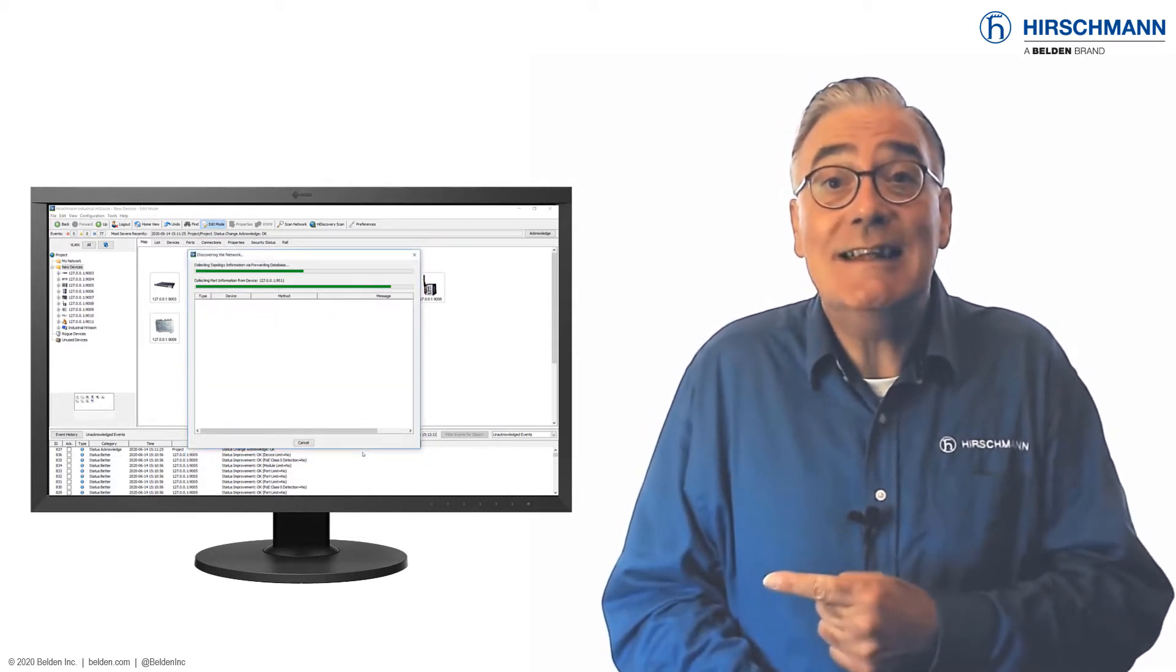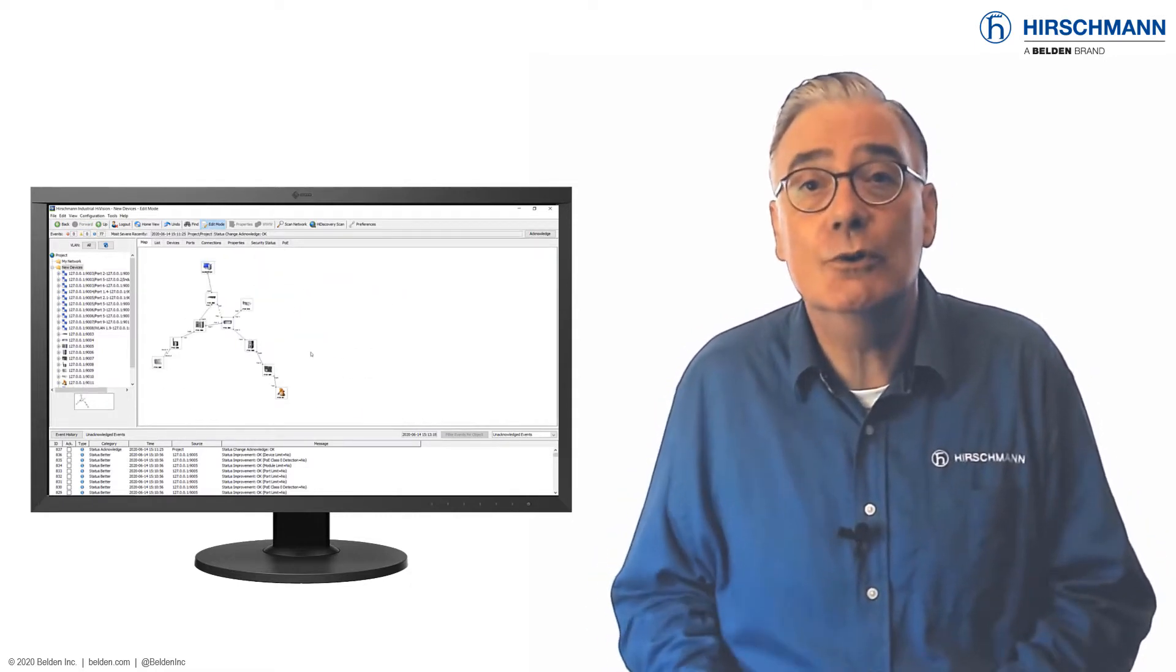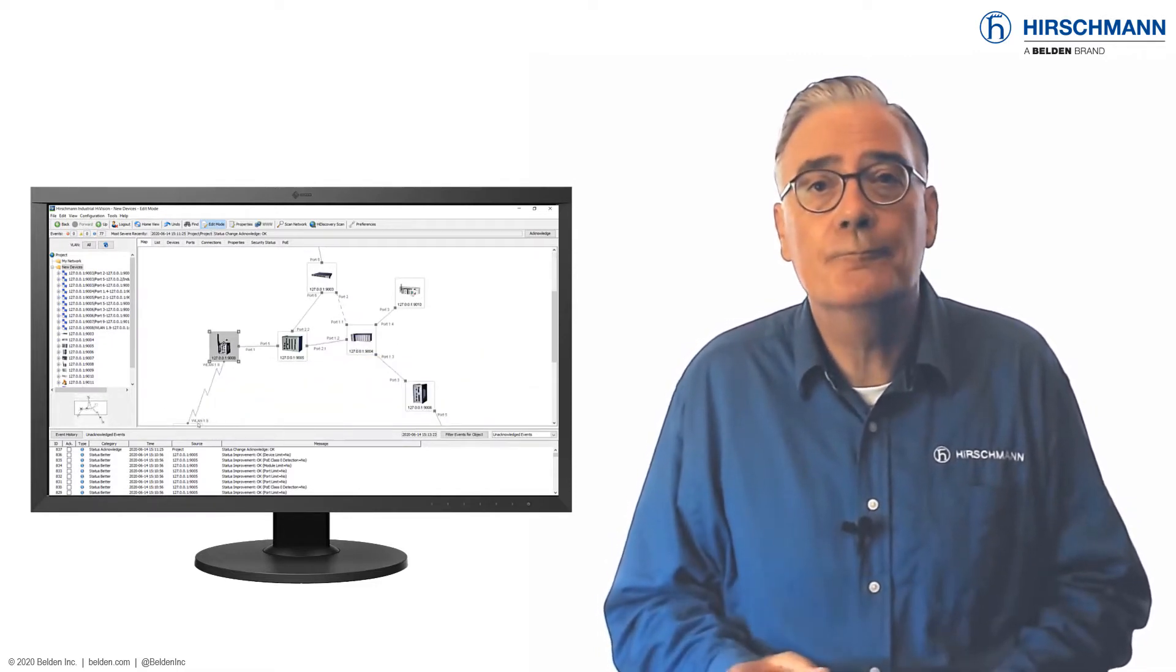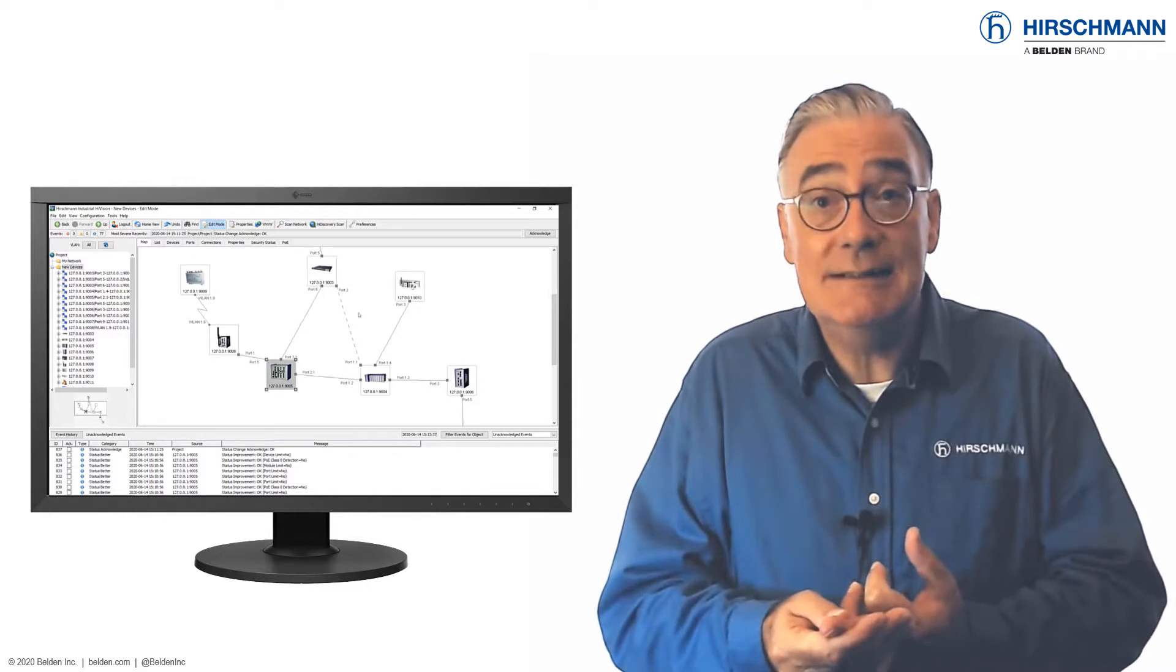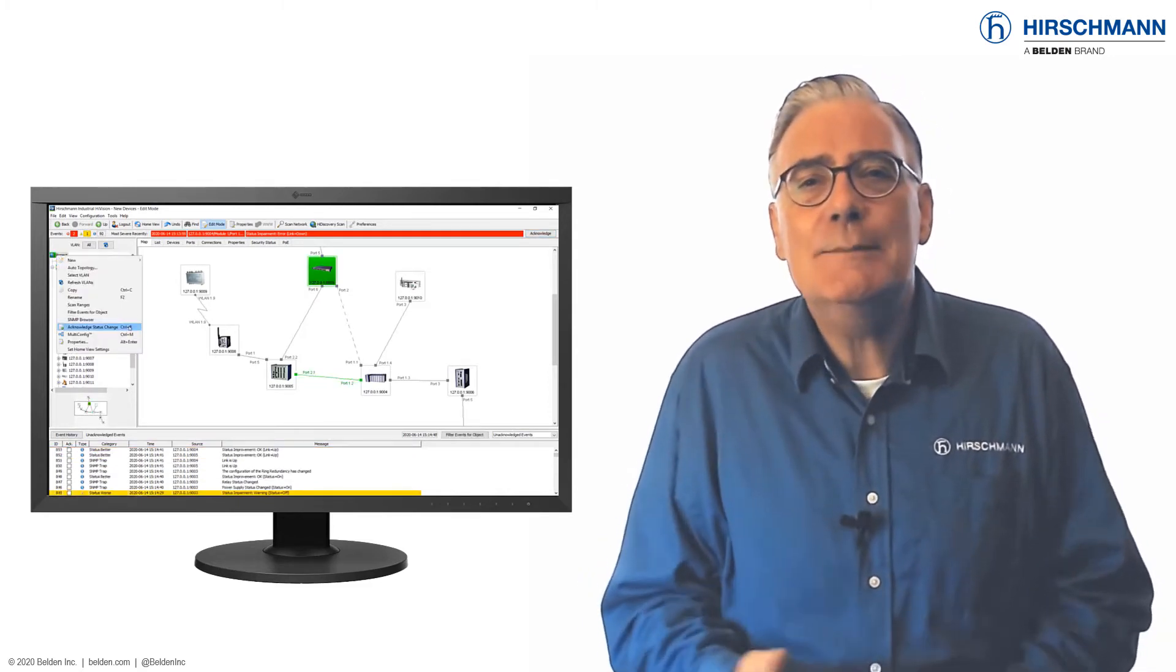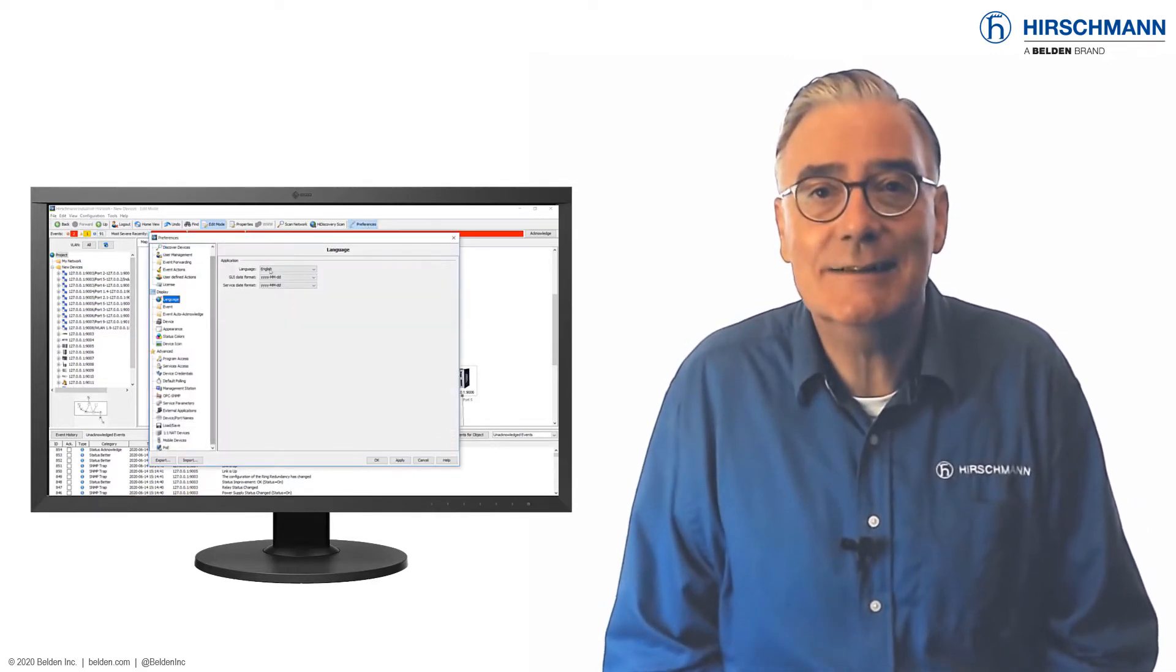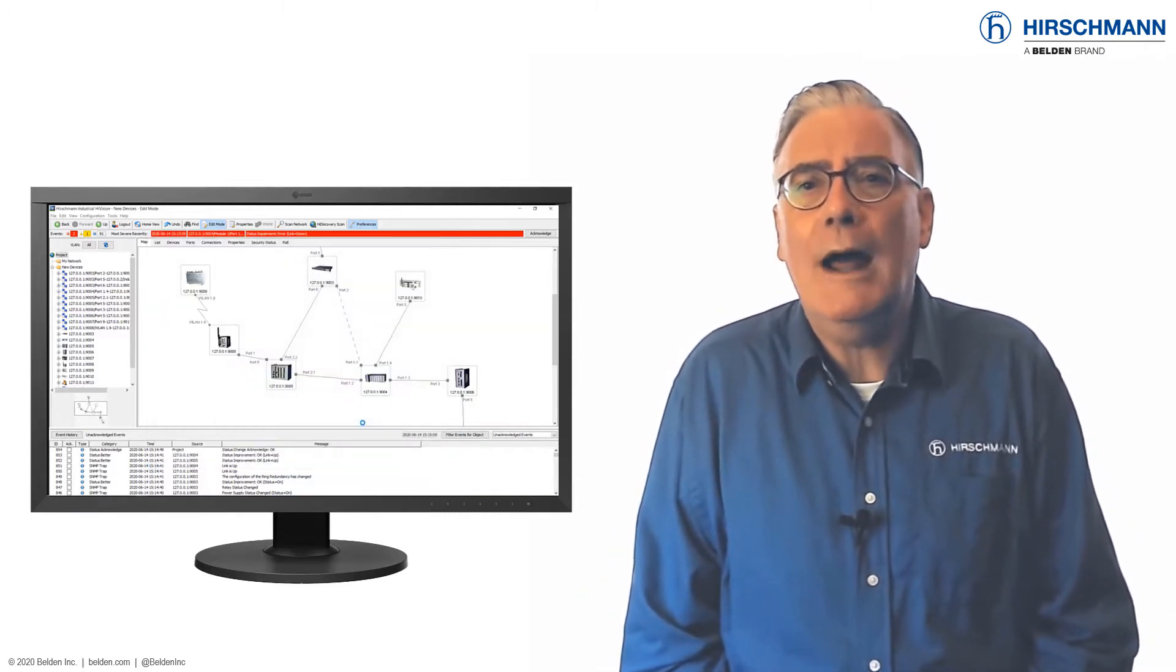As you can see on the left, Industrial HiVision is a highly graphical supervision tool. Network topology maps are a major feature of the software. Each component of a network such as switches, end devices and physical connections have a visual representation complete with status colours. This provides you with a clear and concise overview of your network status. On the internet you will find many videos covering all aspects of network management with Industrial HiVision.